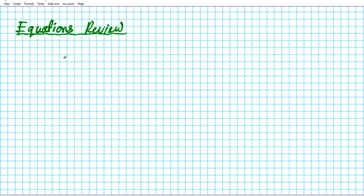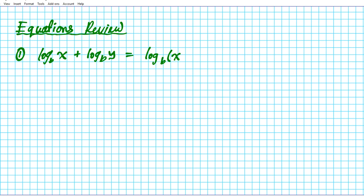We're going to first take a look at the properties of logarithms. The product property states that if you have log base B of X plus log base B of Y, these two can be condensed — since they have the same base — as log base B of X times Y. The sum of logarithms is the same as a logarithm of the product of the logarithmic arguments.